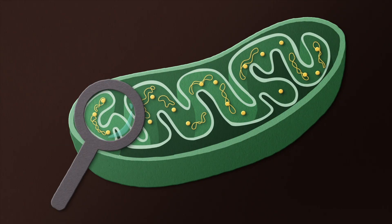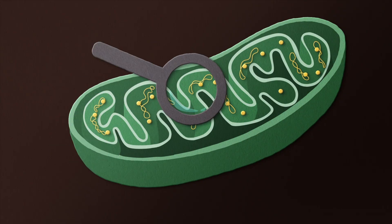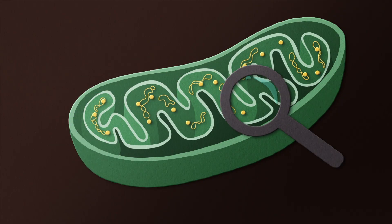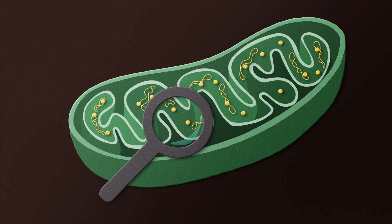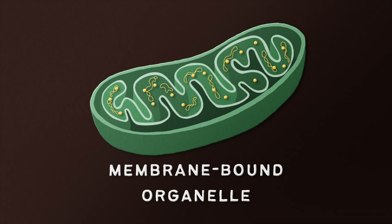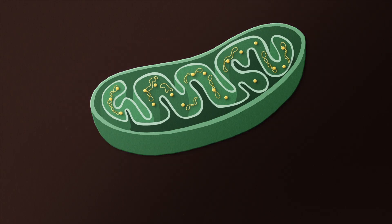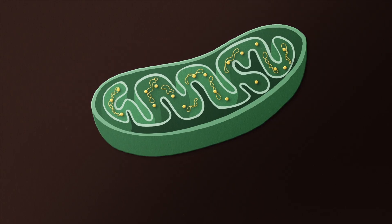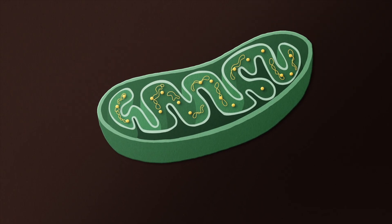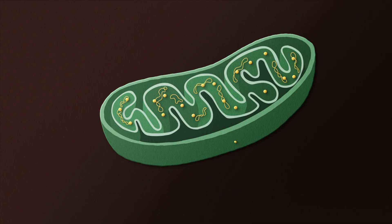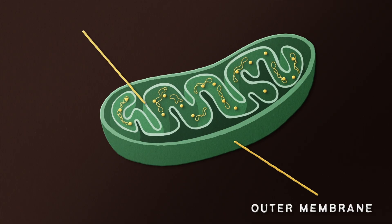Before we get to that, let's take a look inside a mitochondrion. They belong to a class of organelles called membrane-bound and are thus enveloped in a membrane. In fact, there are two separate layers with two very original names: the outer membrane and the inner membrane.